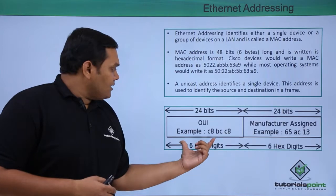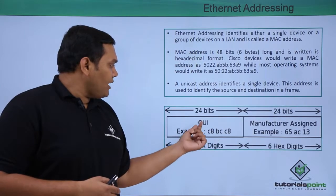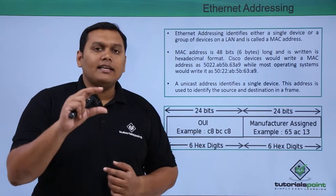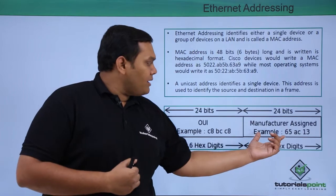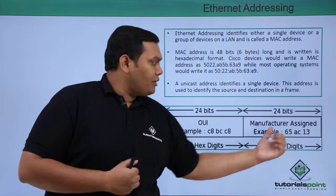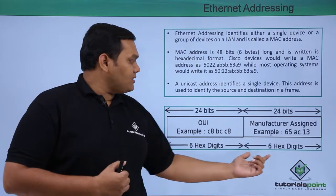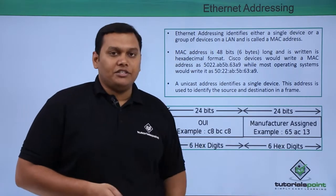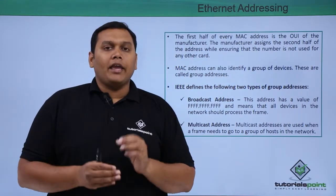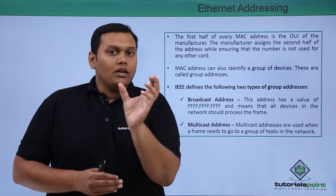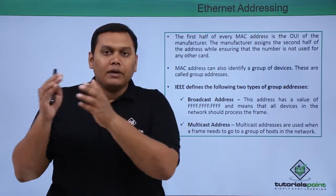As you can see here, the MAC address is structured so that the first 24 bits are given by the OUI, which is the Organizational Unique Identifier assigned by IEEE, and the manufacturer assigns the other 24 bits. So the first half of every MAC address is the OUI given by IEEE to the particular vendor.